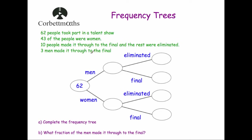So we have 60 people at the start. 43 of the people were women, so we put 43 in for women. That means the rest were men — 60 take away 43 leaves us with 19 — so 19 people were men and 43 were women.